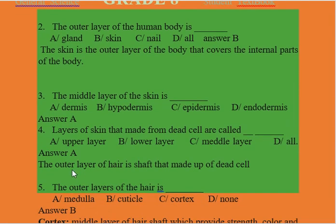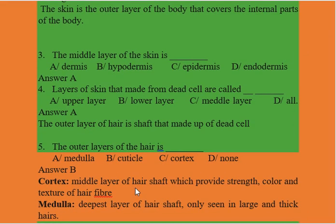The outer layer of the hair is a shaft that is made up of dead cells. The options are: A. Medulla, B. Cuticle, C. Cortex, D. other. The answer is B, Cuticle.